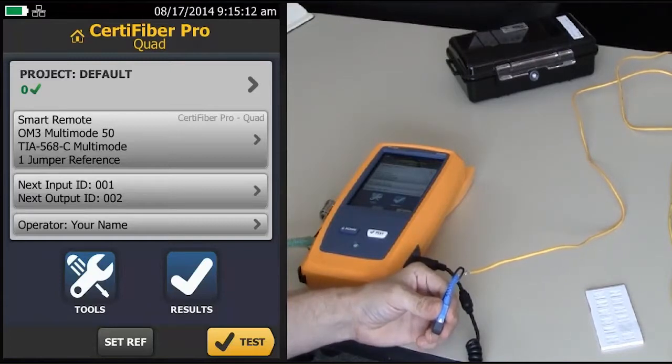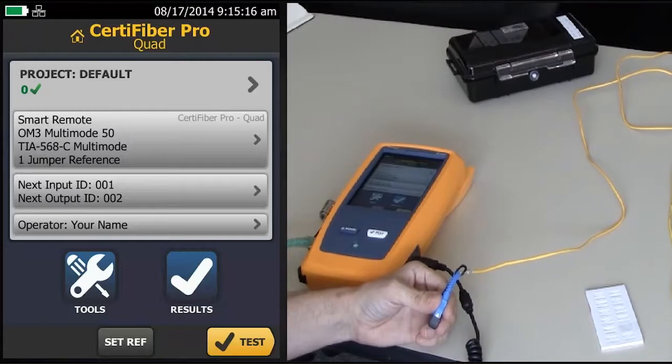One of the things that was added in version 3 on the Versiv platform is the ability for automated fiber inspection.